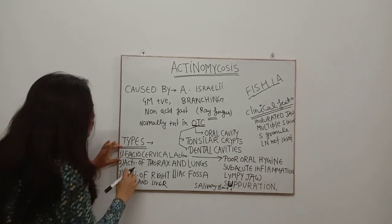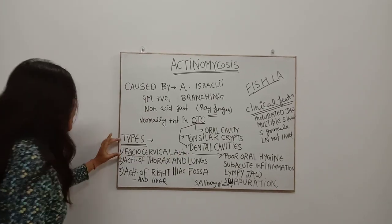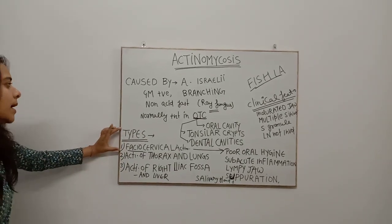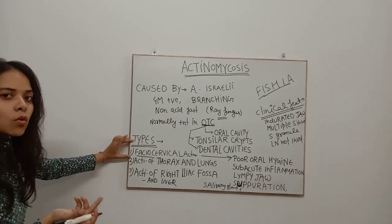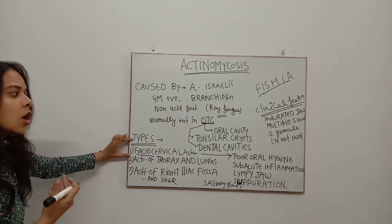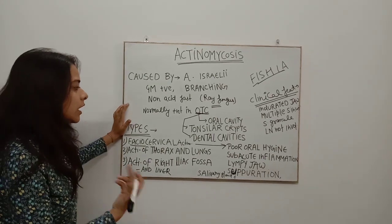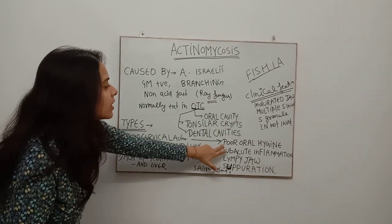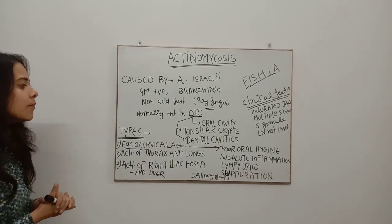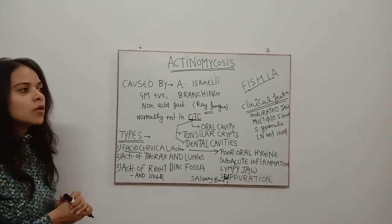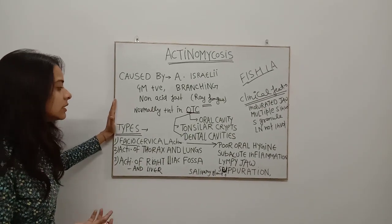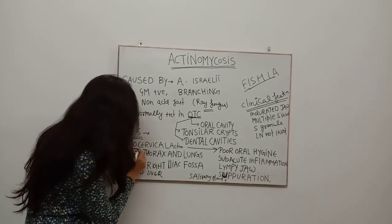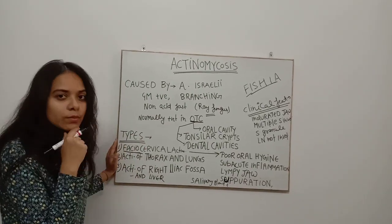Now we will discuss Fascio-cervical Actinomycosis. As discussed previously, Actinomycosis is normally present in the oral cavity, tonsillar crypts, or dental cavities. If the person does not maintain their oral hygiene, it may become pathogenic — particularly in the presence of a bad or damaged tooth. This affects the mandibular region, as the name 'fascio' suggests.